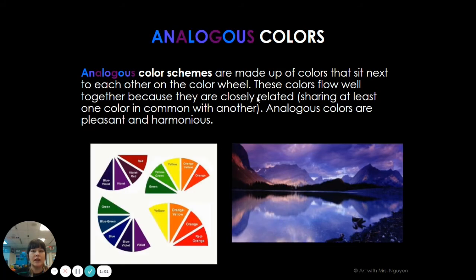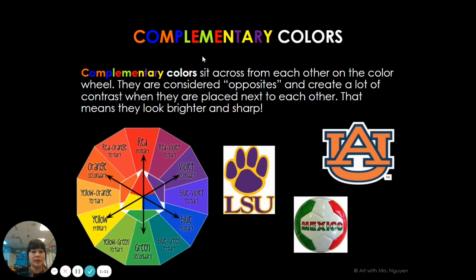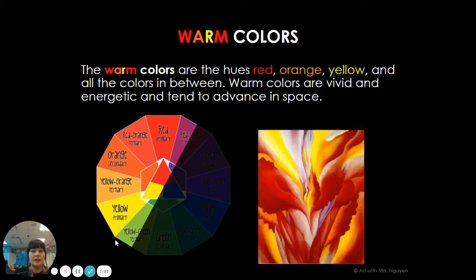Analogous colors are colors that are very similar to each other — they are next to each other or close on the color wheel. Complementary colors are opposite colors on the color wheel: the opposite of red is green, the opposite of orange is blue, and the opposite of yellow is violet. Warm colors are the colors that remind you of a campfire — they are yellow, orange, and red, and everything in between, all on one side of the color wheel.